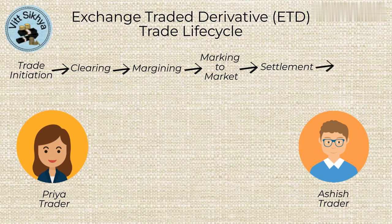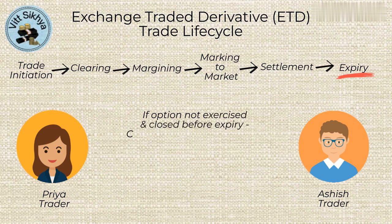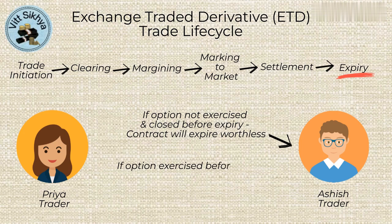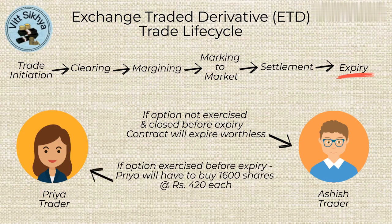The derivative contract will have a specified expiry date, at which point the contract will be closed out and settled. If the contract is not closed out before expiry, the exchange will automatically close it out on the expiry date. If the short-put option contract is not exercised, it will expire worthless on the expiration date and Priya will keep the premium received. However, if the option is exercised, Priya will be required to buy 1600 shares of ITC stock at the strike price of Rs. 420 per share.